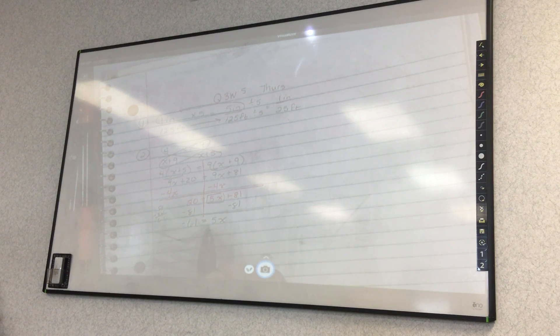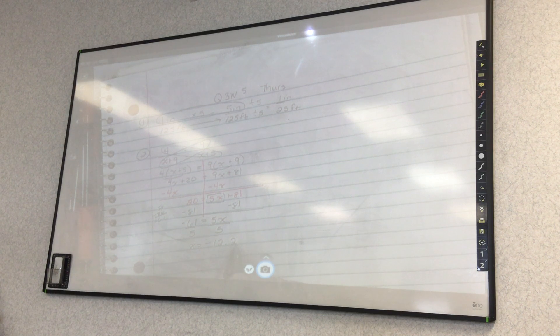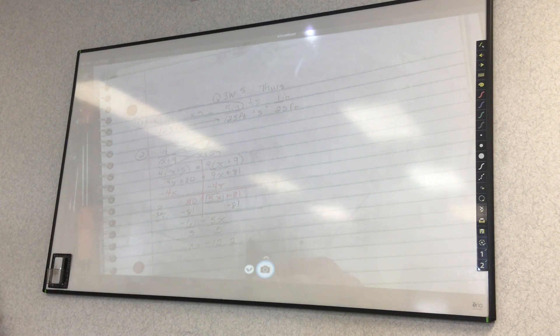Negative 61 equals 5x. Then I divide by 5 on both sides. When I put it 61 divided by 5, you get negative 12.2. Or you could say 12 and 1/5.